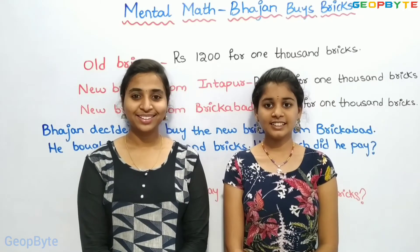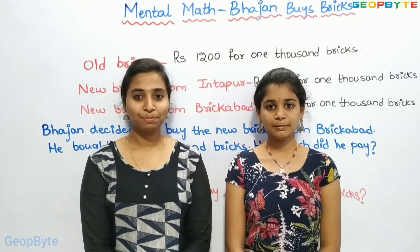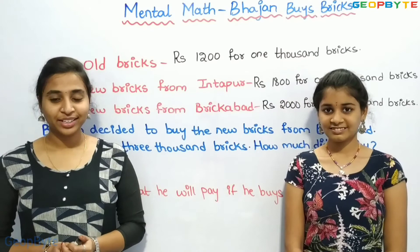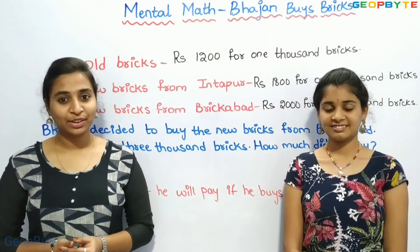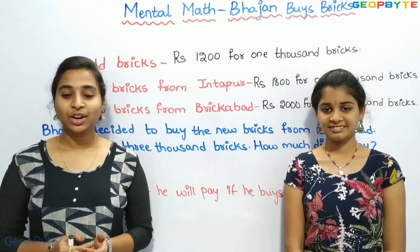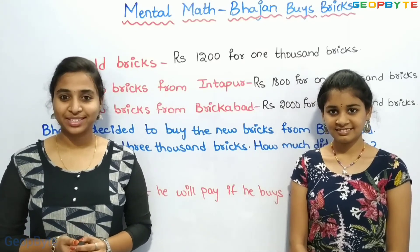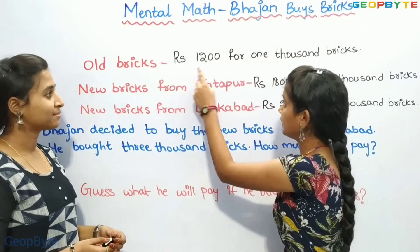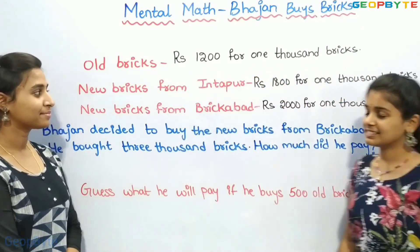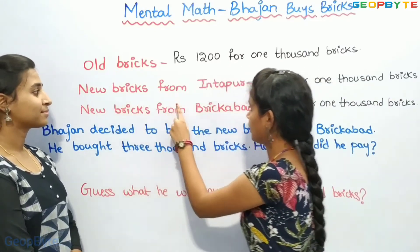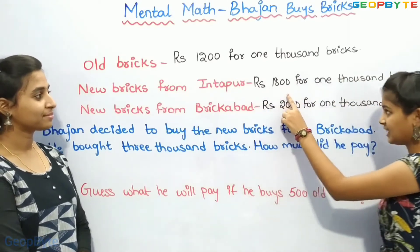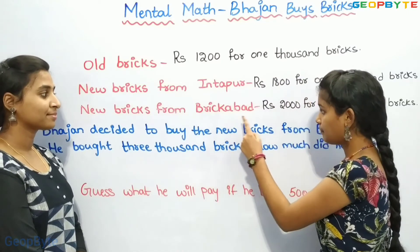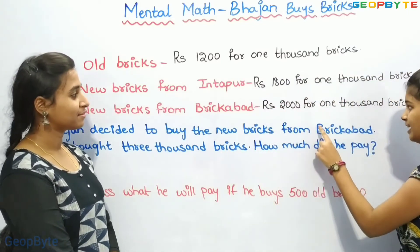Now let us get into the topic: Mental Math — Bajan Buys Bricks. Bajan went to buy bricks. The price was given for 1,000 bricks and was different for different types. The cost of old bricks is Rs. 1,200 for 1,000 bricks. The cost of new bricks from Intapur is Rs. 1,800 for 1,000 bricks. The cost of new bricks from Brikabad is Rs. 2,000 for 1,000 bricks.